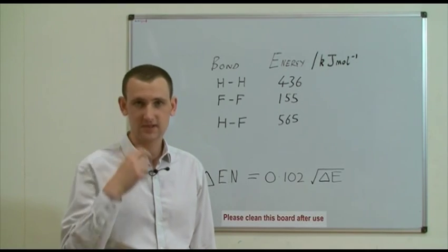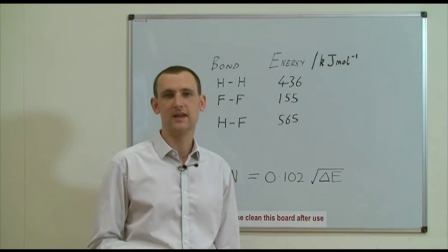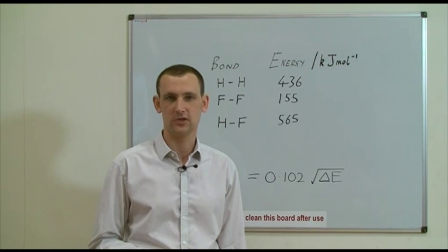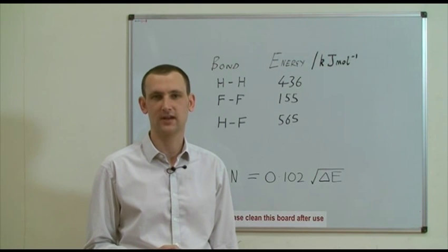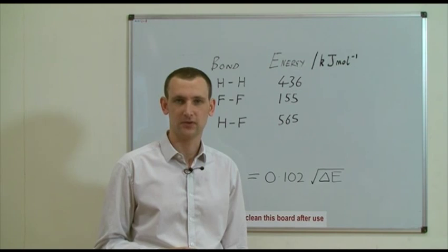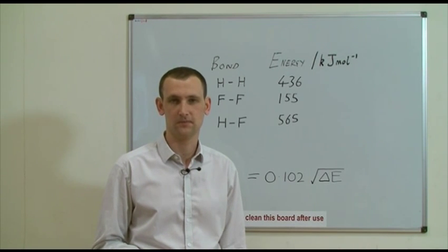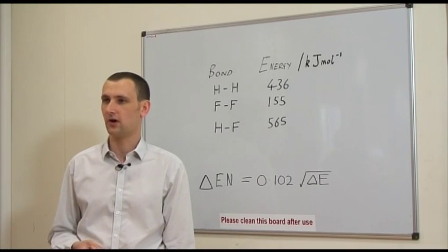Pauling reasoned that the difference in bond strength for a heteroatomic bond — the AB bond — and the average value for the AA and BB bonds must be due to ionic contributions, and this would then be proportional to the electronegativity difference. Using the values for the HF bond, we can see that the average value for H–H and F–F is only 296 kJ per mole. The actual HF bond is 269 kJ per mole stronger, and this Pauling attributes to the ionic contribution.